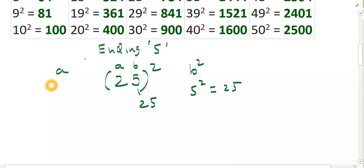Then A is here. Then A, after A, see A is 2 here. Immediately after 2, the immediate number you get is 3. So multiply these two numbers, 2 into 3, 6. This is what you do here.